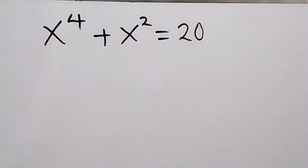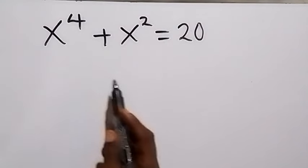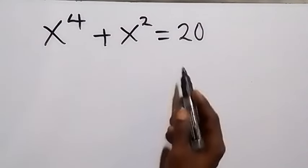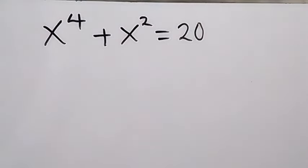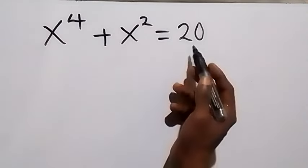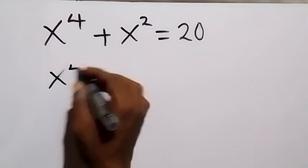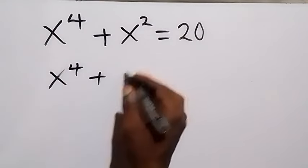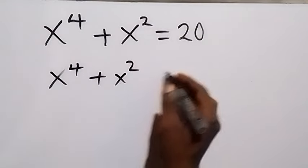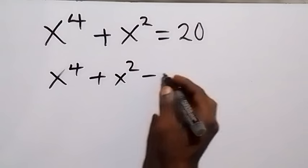Hello, you are welcome. How to solve this problem: x raised to power 4 plus x squared equals 20. Give a thumbs up and subscribe. From here, let's take 20 to this side — we have x raised to power 4, then plus x squared, then minus 20.